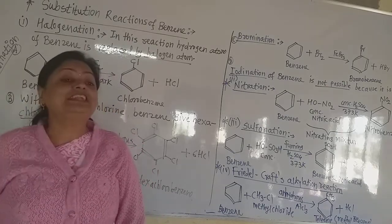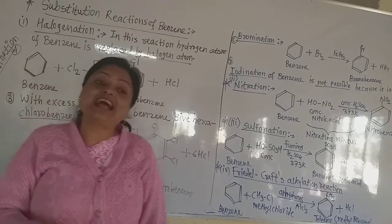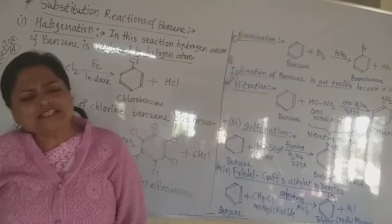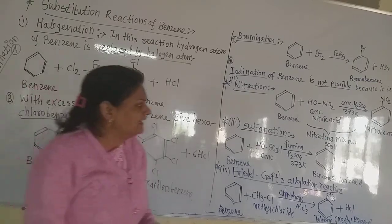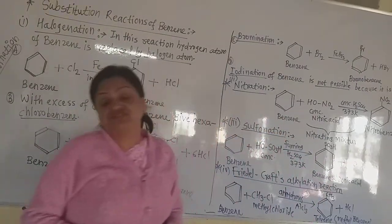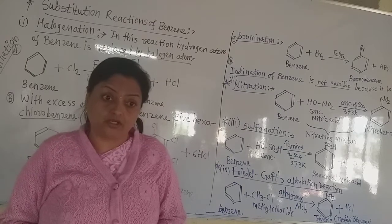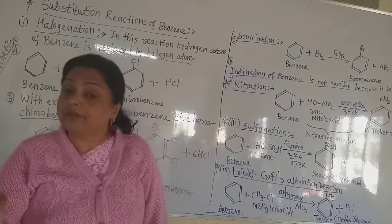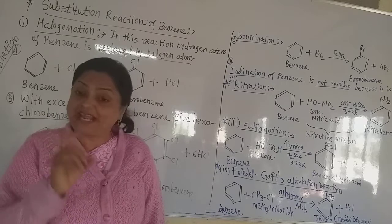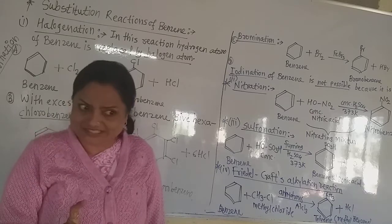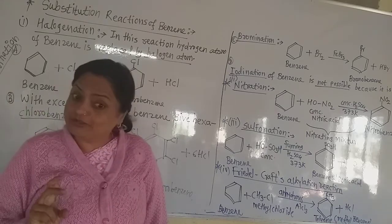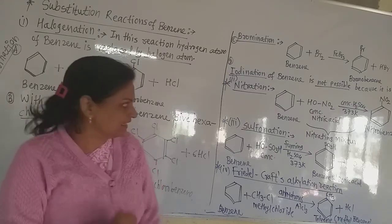For nitration, a nitrating mixture is required. What is this nitrating mixture? It is a mixture of 1 part concentrated nitric acid and concentrated sulfuric acid. Both must be concentrated. The formula of nitric acid is HNO3.